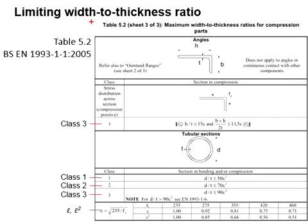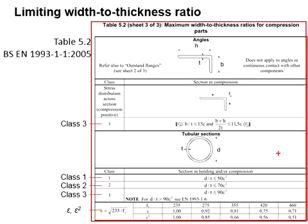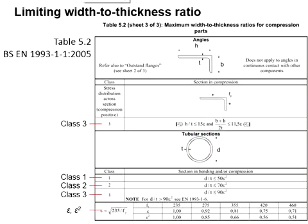This table gives you the specification of classification for angles and tubular section. The angle is always considered as class 3. If it is not class 3, that means it will be class 4.